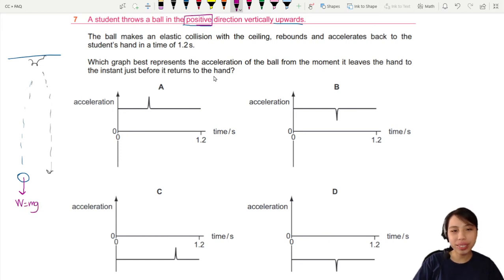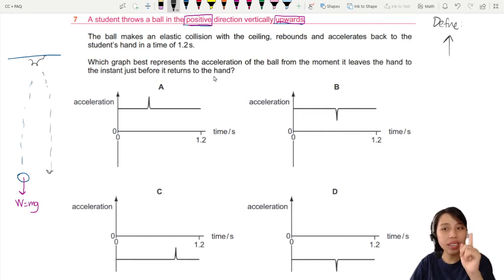Now remember earlier the question said positive is upwards. It means you need to define the system that says anything that moves upwards or points upwards, all the vectors, is positive. You choose this system usually, but in this question they choose it for you. Anything that points downwards is negative.